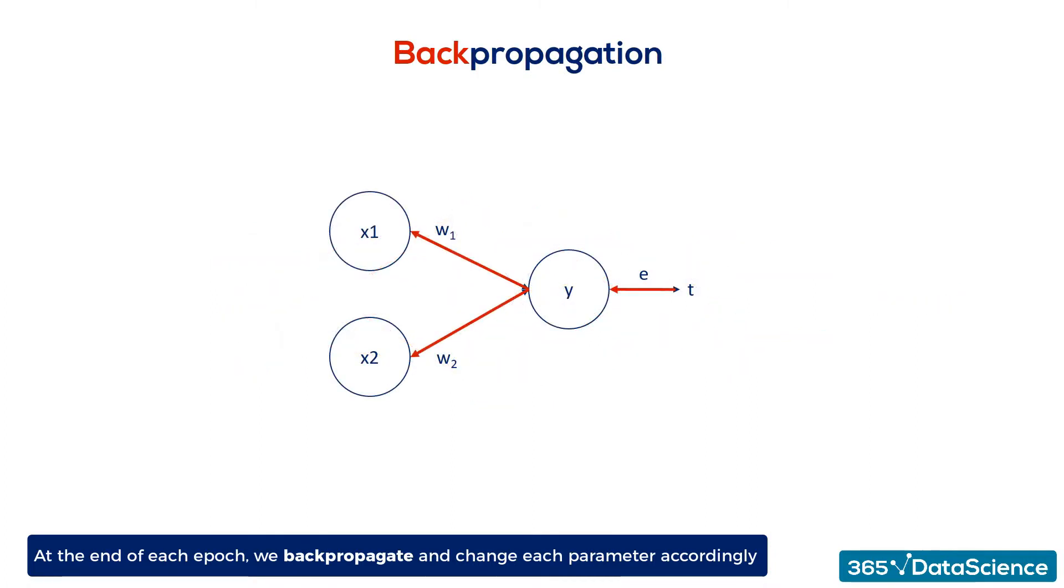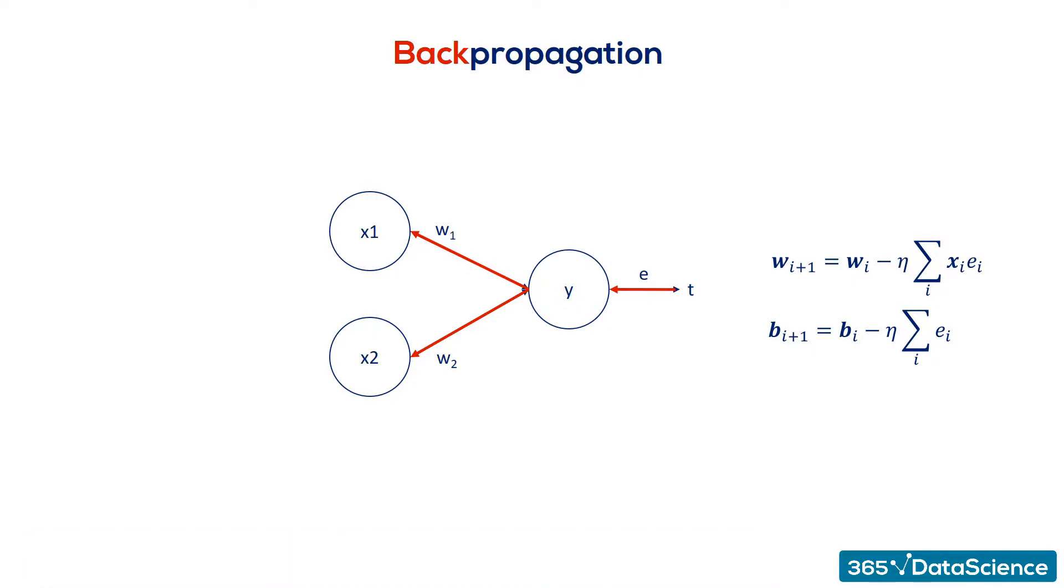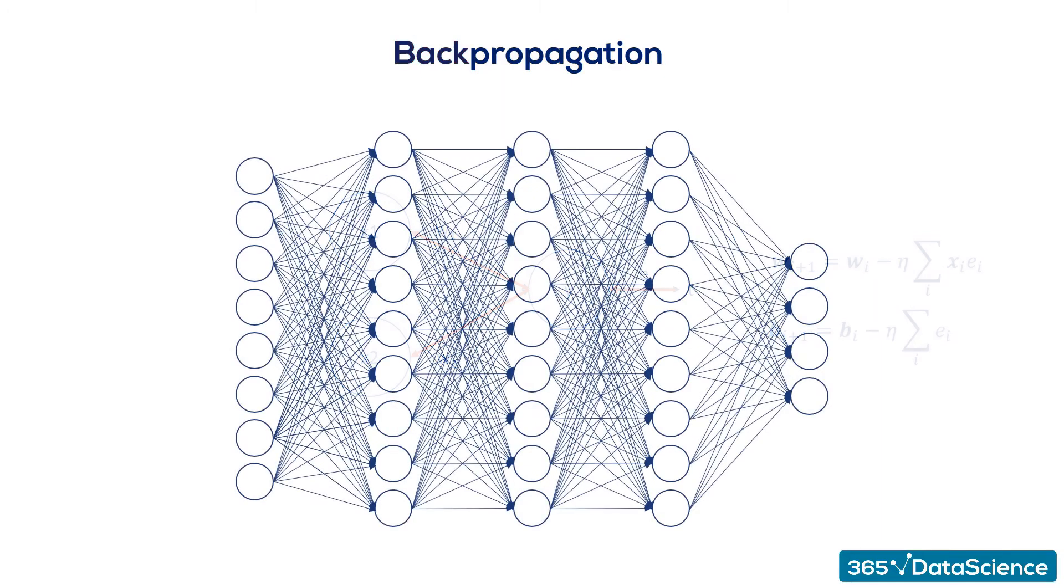For the minimal example, the backpropagation consisted of a single step, aligning the weights given the errors we obtained. Here's where it gets a little tricky. When we have a deep net, we must update all the weights related to the input layer and the hidden layers.